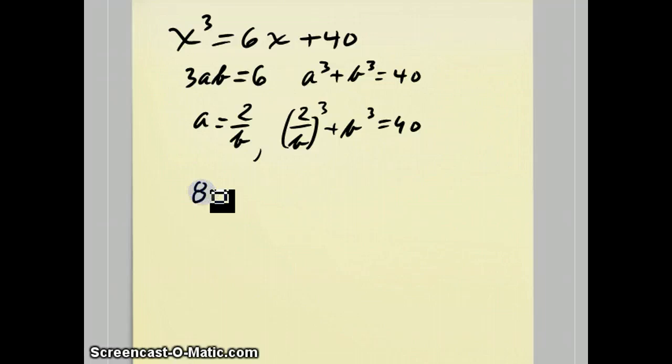You'll ultimately end up with 8 over b cubed plus b cubed equals 40. Multiply everything through by b cubed, get 8 plus b to the 6 equals 40b cubed. Move everything over to one side.